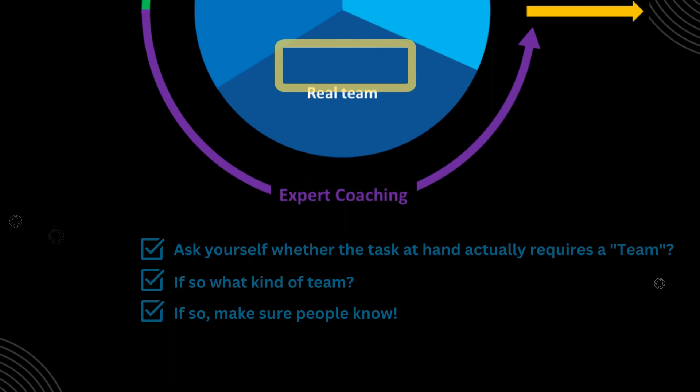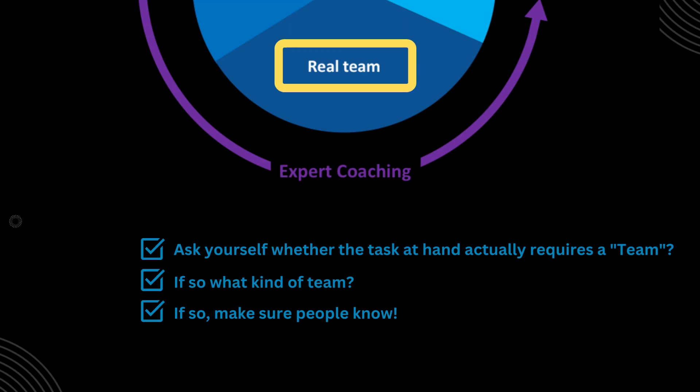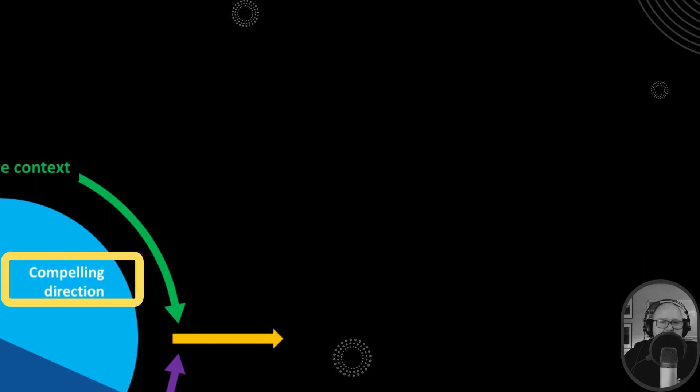First, teams must be real. People have to know who is on the team and who is not, and it's the leader's job to make that clear. As mentioned in the Tuckman video, we often think we know who's on the team, but very often we don't. When we speak to people about who's on the team and what they're supposed to be doing, there's quite a lot more fuzziness than we would want to see.